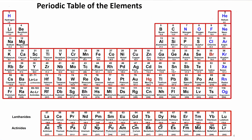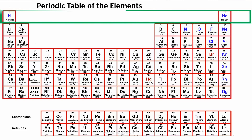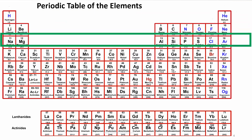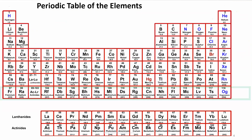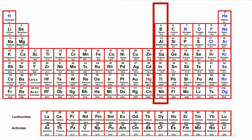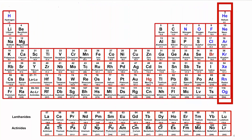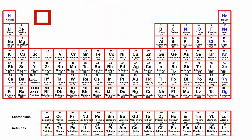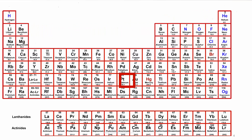The periodic table of the elements is made of seven horizontal rows, 18 vertical groups, and 118 squares, each belonging to one element.